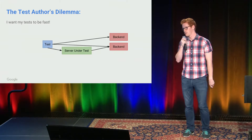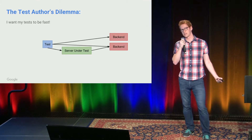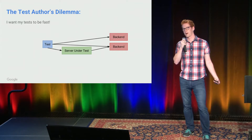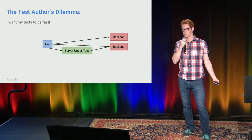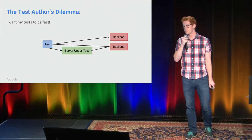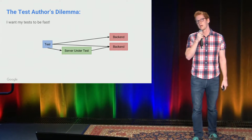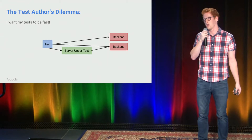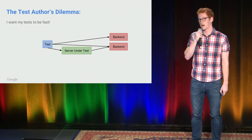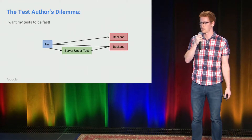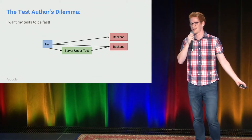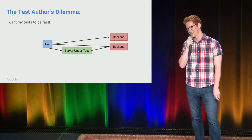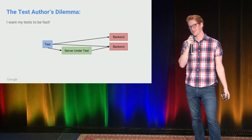Let's add a couple of backends. Now when my test needs to run, it needs to start up my server and also two backend servers that I'm not really exercising code in. My test is a little bit longer at this point. And even if you start up servers in parallel, oftentimes your test is CPU bound, so you're not going to get the full parallelization effect.